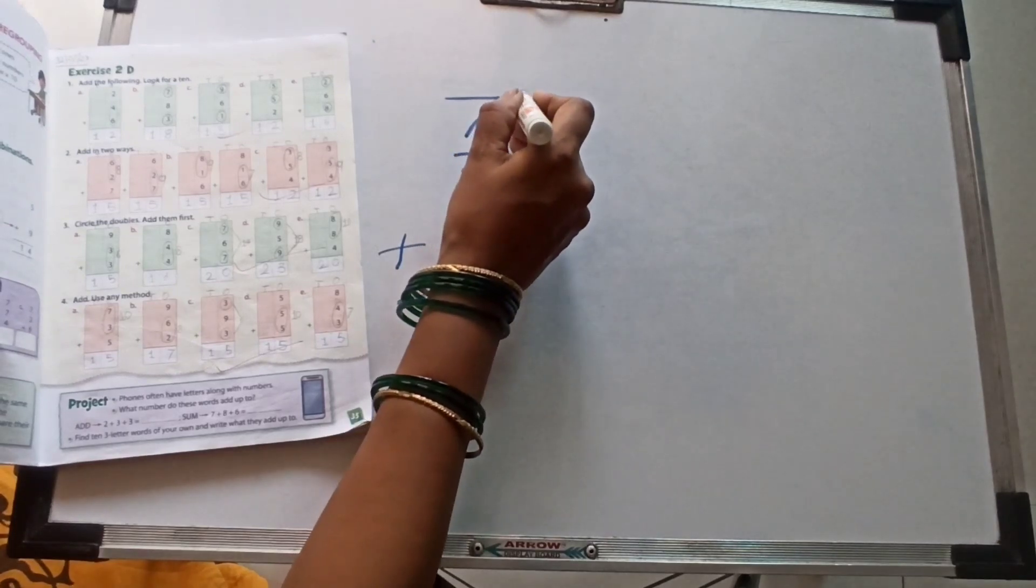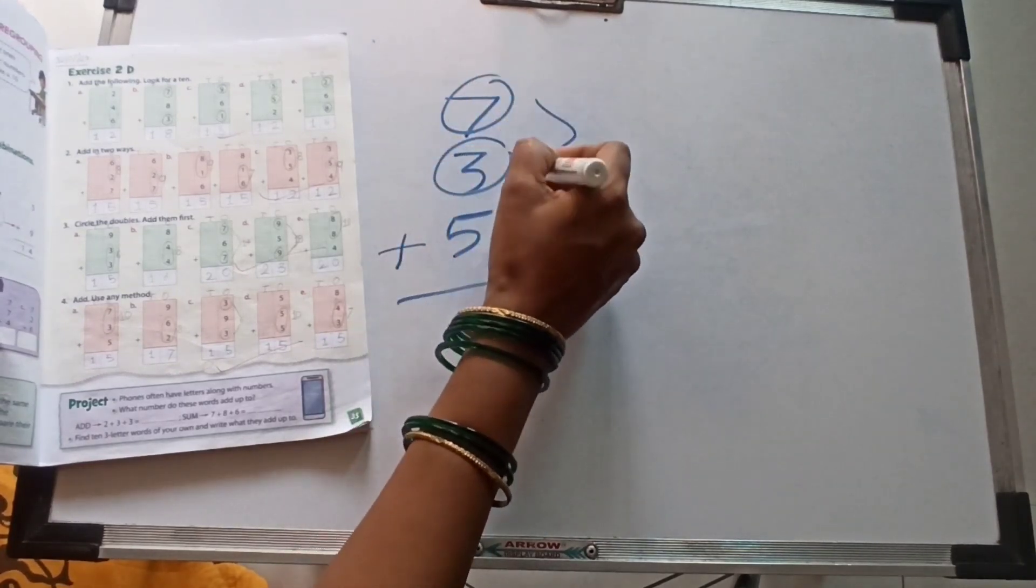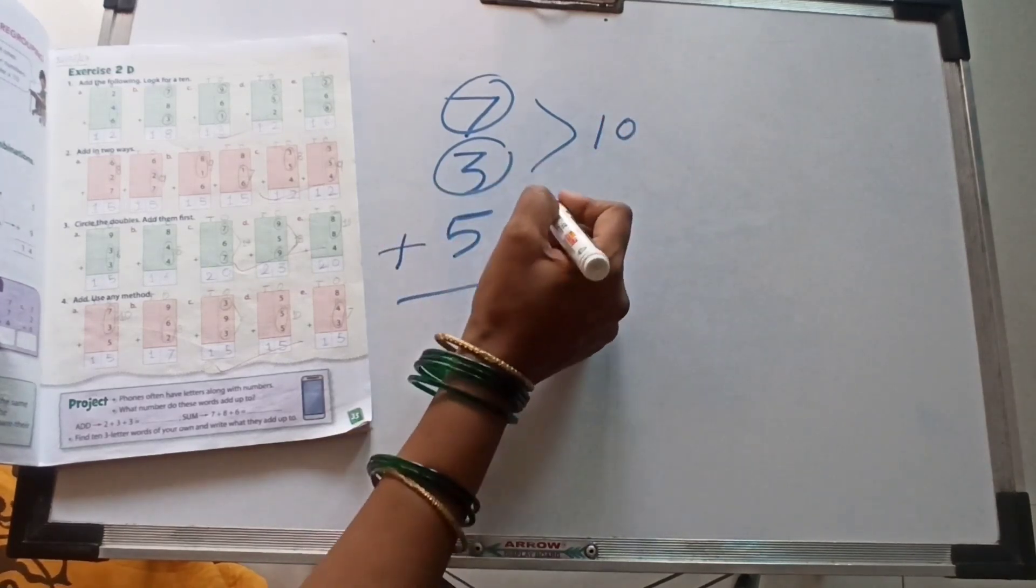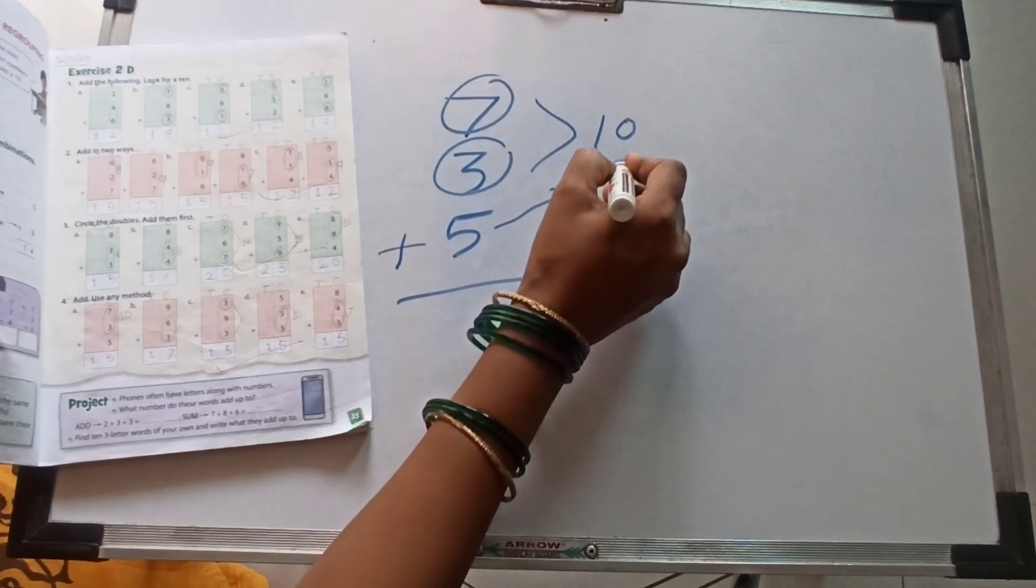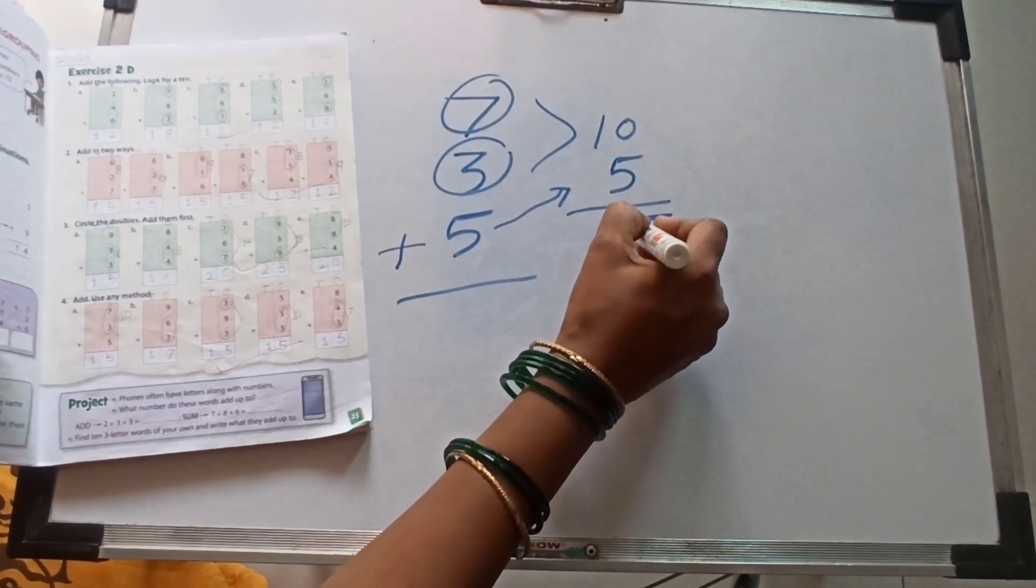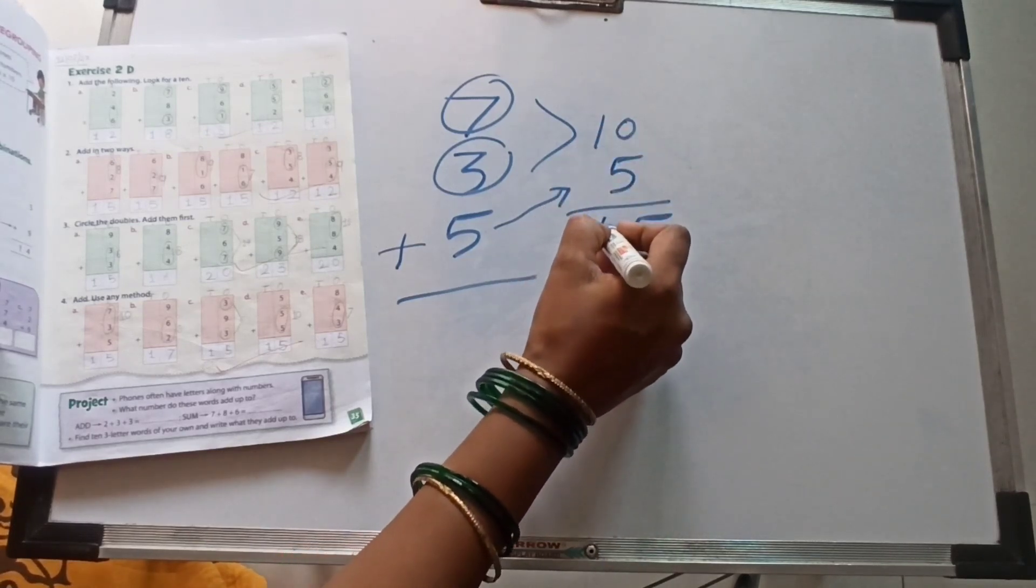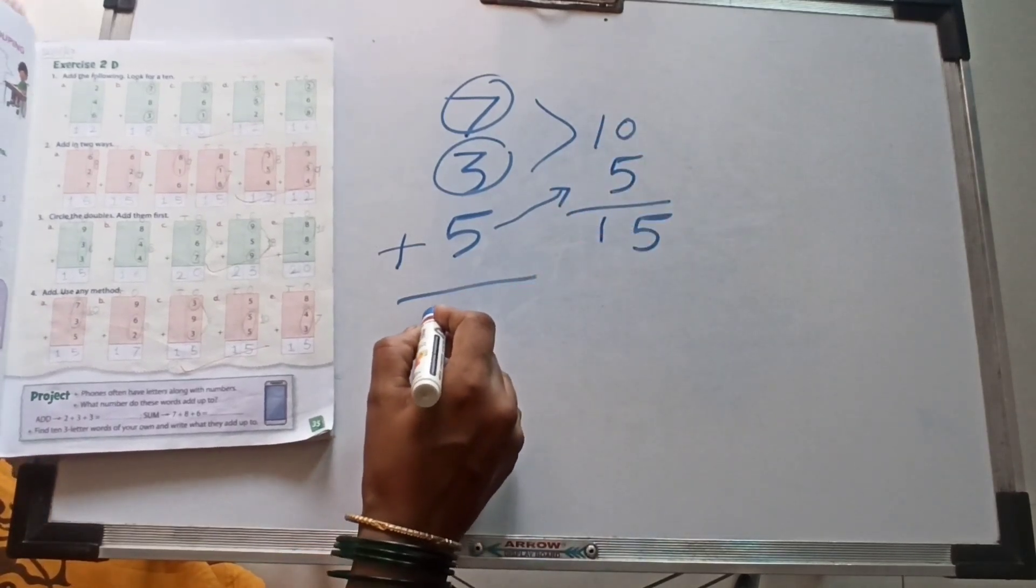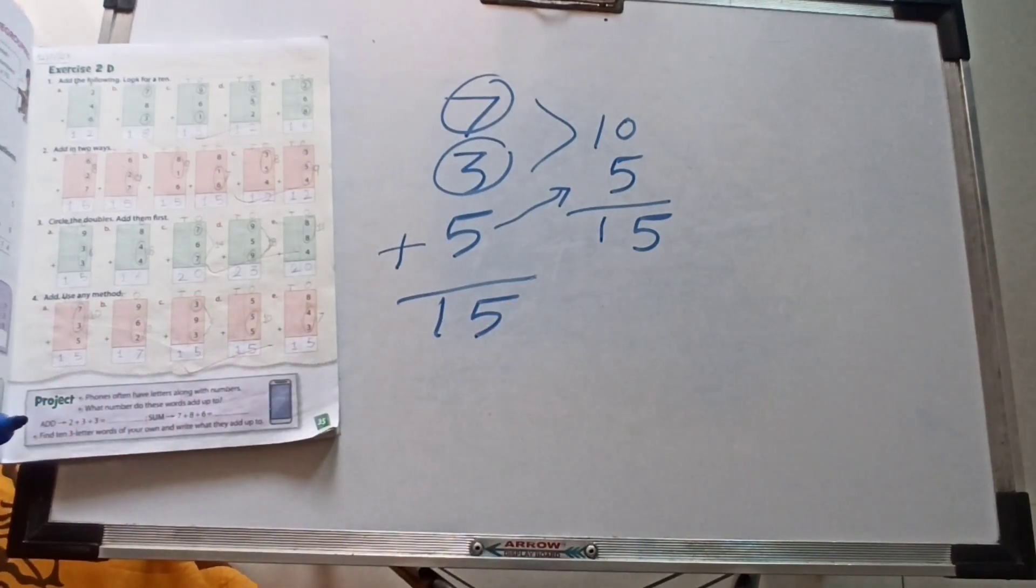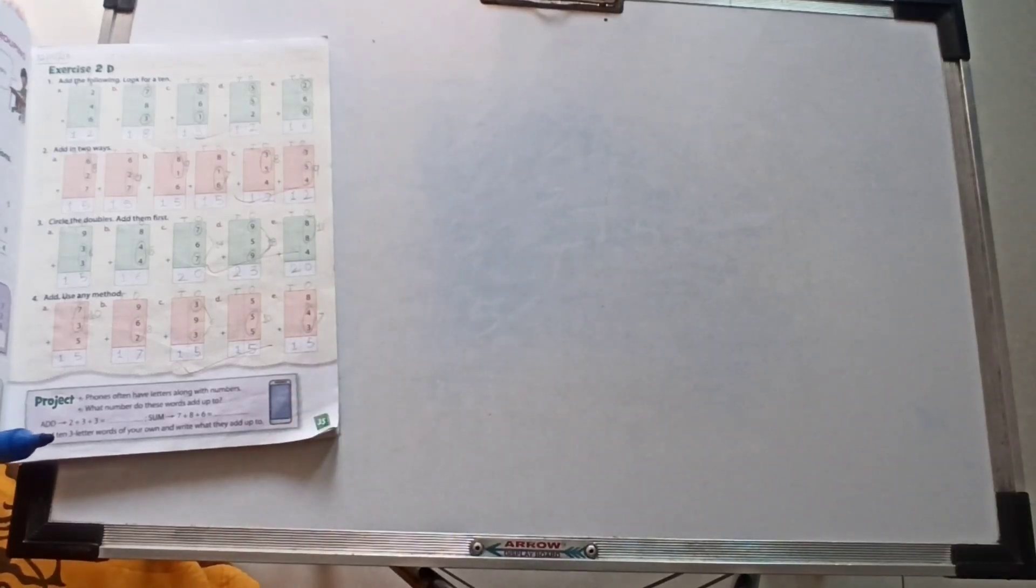See, this one 7 plus 3, 10. Done. 10 plus this one, 5. Write down 5. Because 0 plus 5, 5. And 1, write down your sum. Means finally we got our answer, 15.